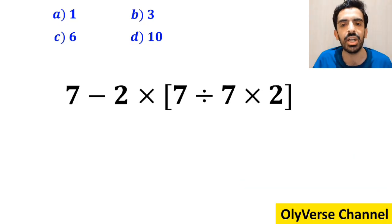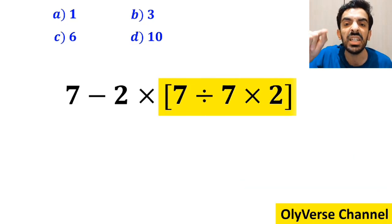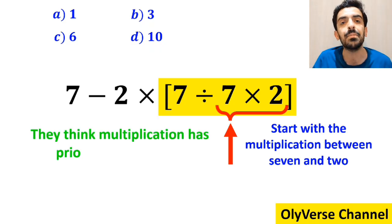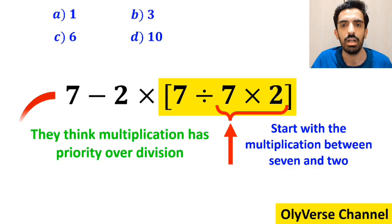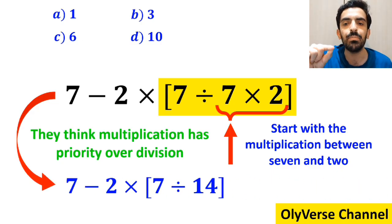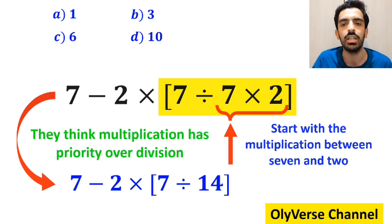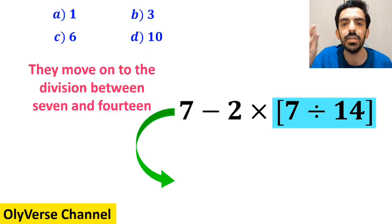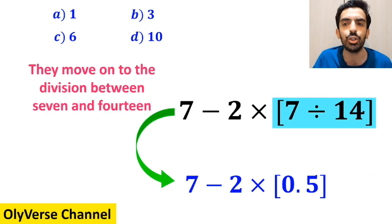Some other people to solve this question first go straight to the expression inside the brackets and start with the multiplication between 7 and 2, because they think multiplication has priority over division. So instead of the entire expression, they write 7 minus 2 times 7 divided by 14 inside the brackets.